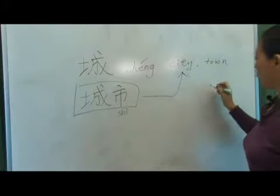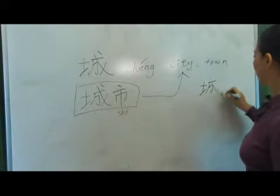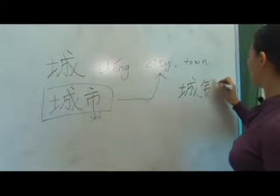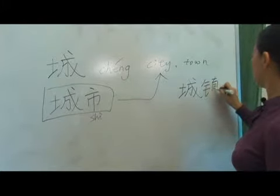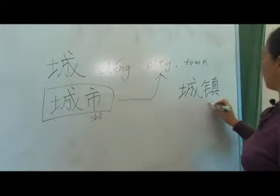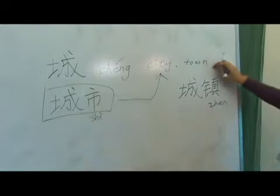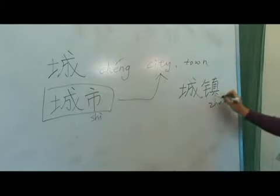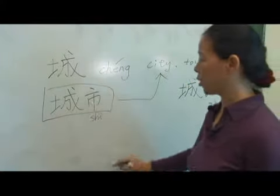We also say 城镇. This word 镇 means a town, a small town. So 城镇 means town. 城镇 is smaller than the city 城市.